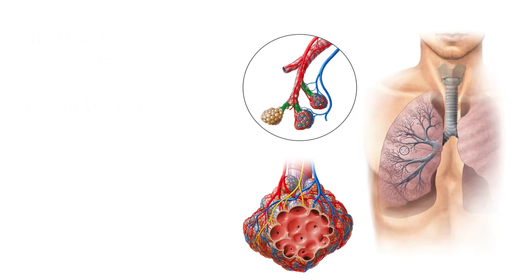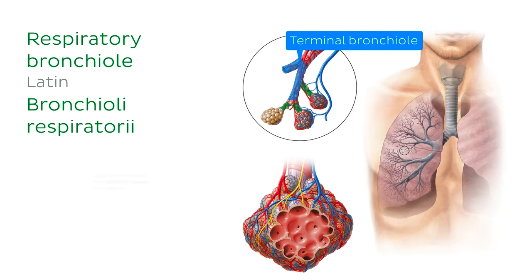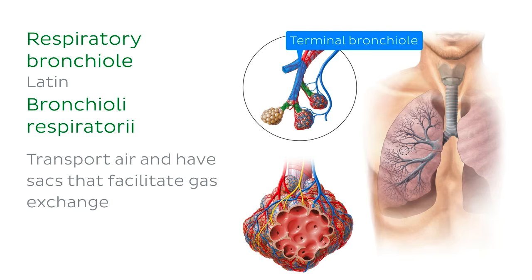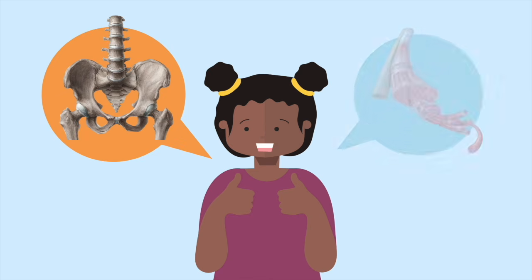Remember the other type of bronchioles? That's right — respiratory bronchioles. These are the bronchioles distal to the terminal bronchioles, now highlighted in green. Respiratory bronchioles, which measure about 0.5 mm in diameter, transport air and have these little sacs that facilitate gas exchange.